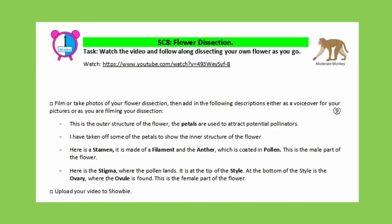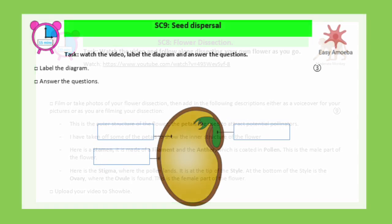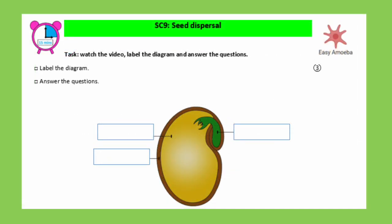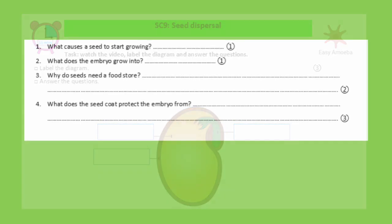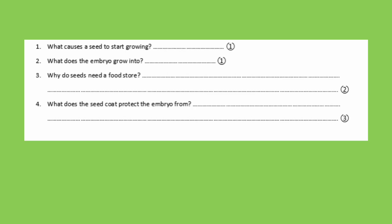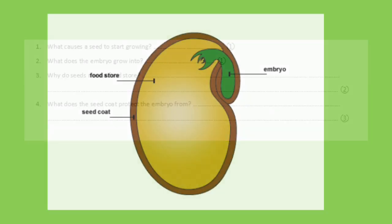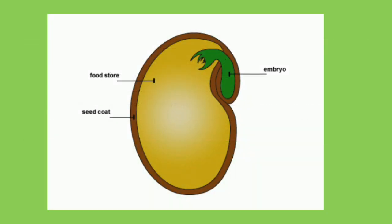We're going to be skipping SC8 (the flower dissection) for the moment, as you've been asked to get hold of flowers for next week. So we're moving on to SC9: seed dispersal. In SC9 we're going to be labelling a diagram of a seed and answering questions about the function of each part. The three parts of a seed you need to know are the embryo, the food store, and the seed coat.